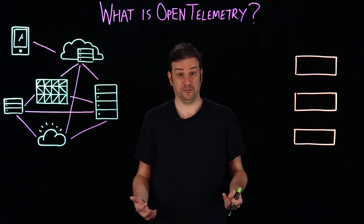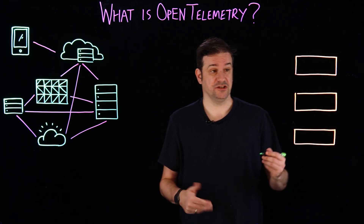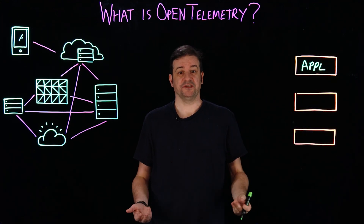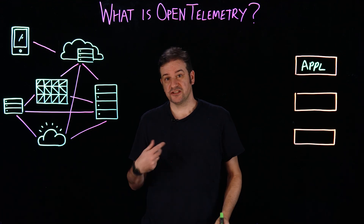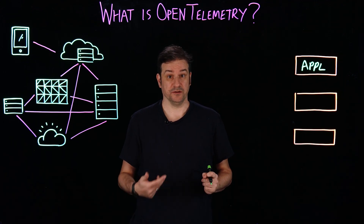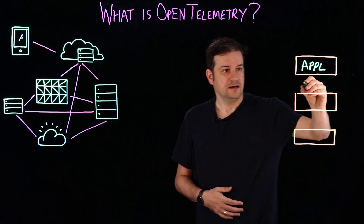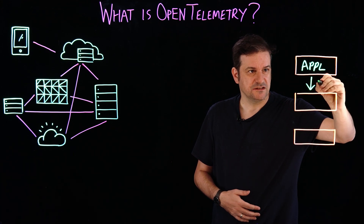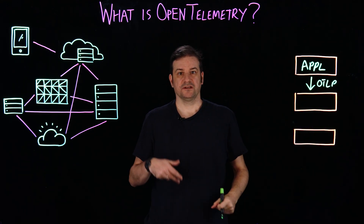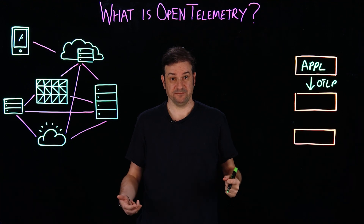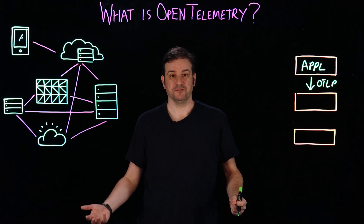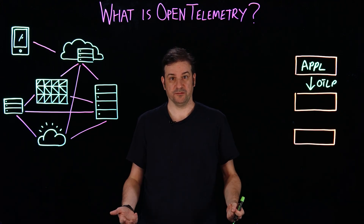Now we're going to talk about some of the basic concepts of open telemetry. First, your application or the environment it's running on needs to be instrumented. This will allow the signals to be generated in order to observe the system. This can either be done automatically, depending on the language that you're using, or it might have to be done manually using SDKs provided by open telemetry. The system will then generate data in the form of open telemetry protocol, or OTLP. This describes properties of the system that are being observed. By complying with this standard, different spans from different technologies and different systems can then be correlated together to give the full observability view of the system.